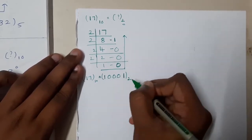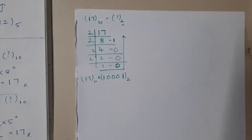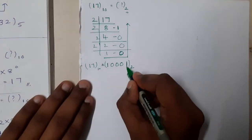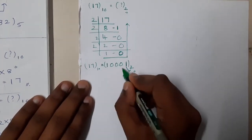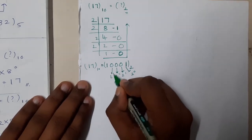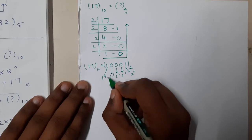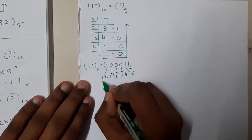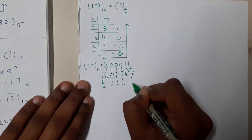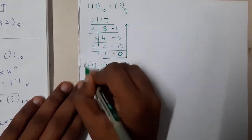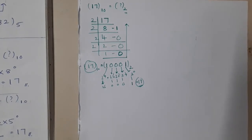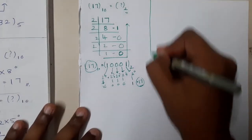To confirm: multiply each bit by its corresponding power of 2 — 1×2⁴ = 16, 0×2³ = 0, 0×2² = 0, 0×2¹ = 0, 1×2⁰ = 1. Adding them gives 17. So 10001 in base 2 is the correct binary representation of 17.